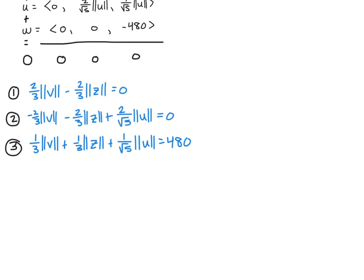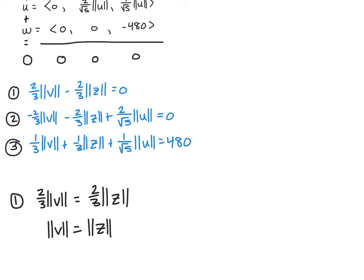There are many ways to solve a system of three variables — matrices, substitution, elimination. I'll use substitution and elimination. From equation 1, (2/3)|V| = (2/3)|Z|, which means |V| = |Z|. We can substitute this into equations 2 and 3.